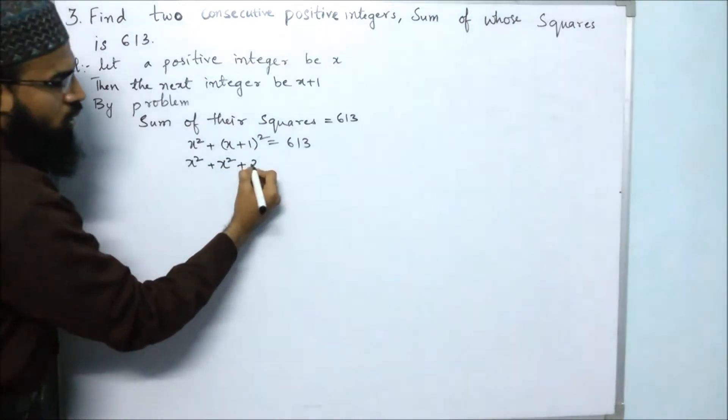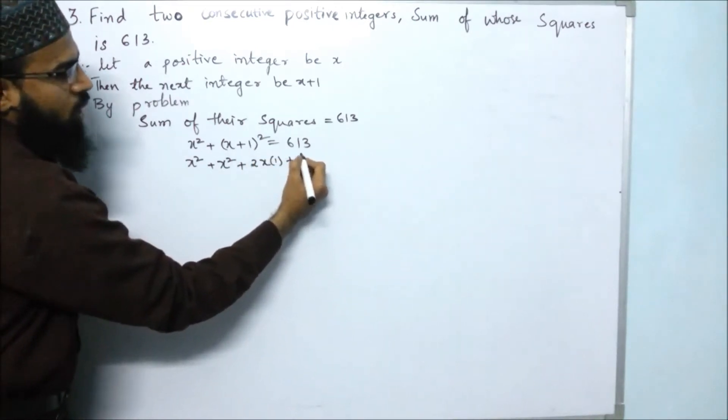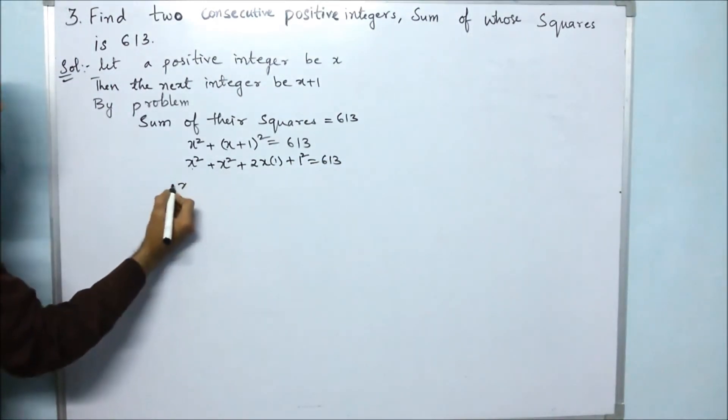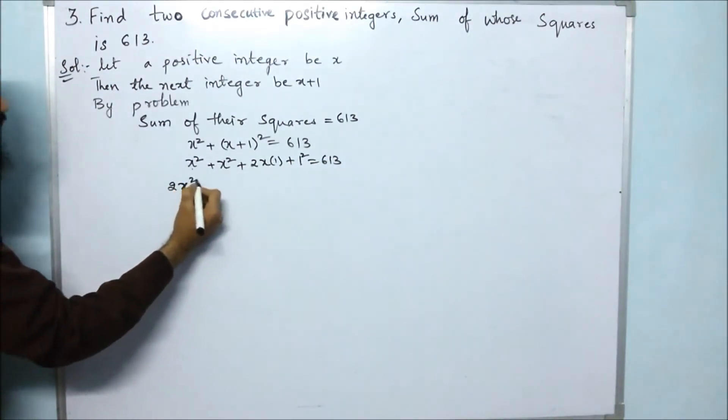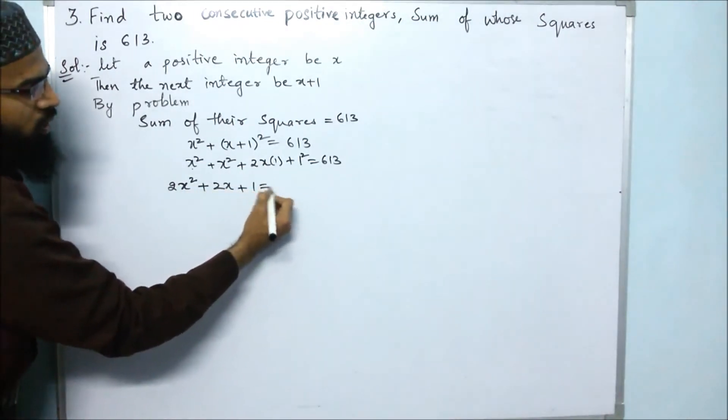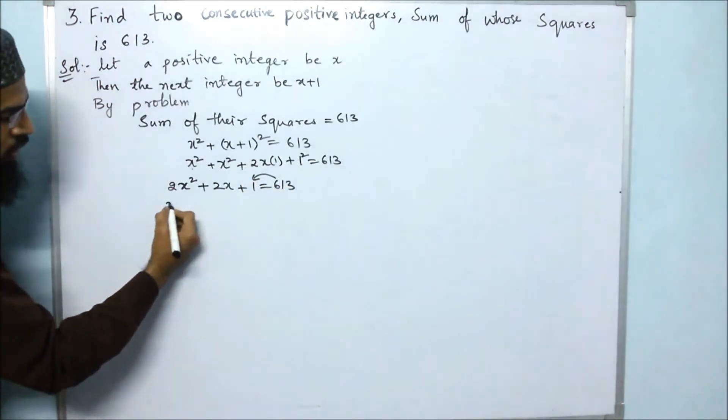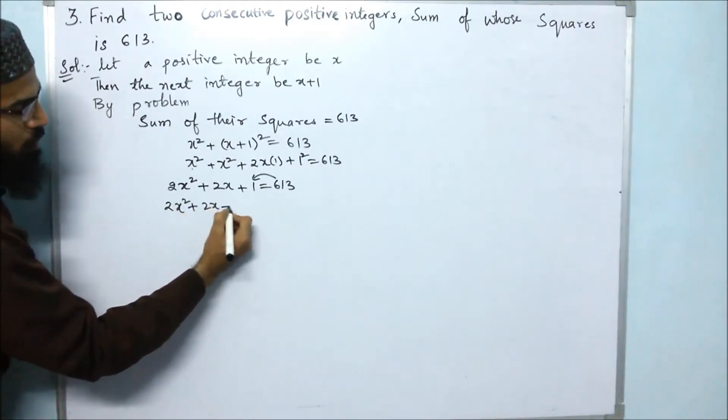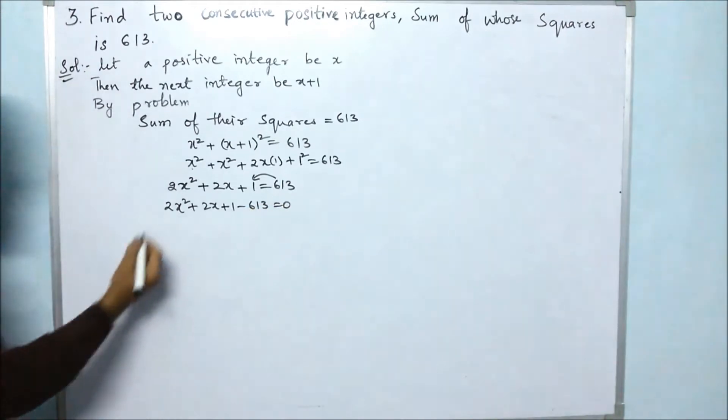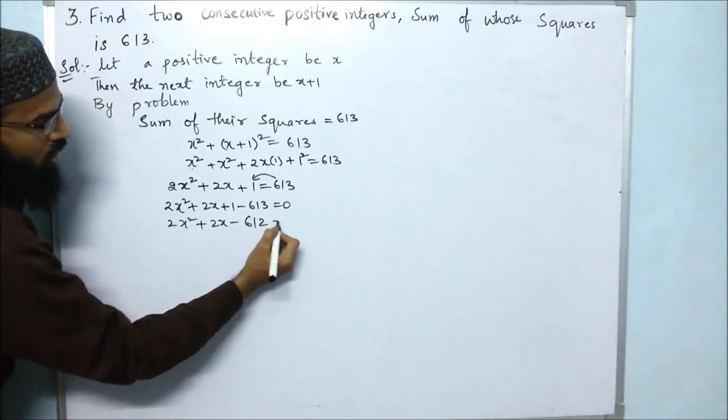So a² plus 2ab plus b², that is 1² = 613. Next, x² - how many x² are there? 2x² plus 2 ones are 2. So 2x² plus 2x plus 1 = 613. 613 comes here, so it will become negative. So 2x² + 2x + 1 - 613 = 0. Next 2x² + 2x - 612 = 0.